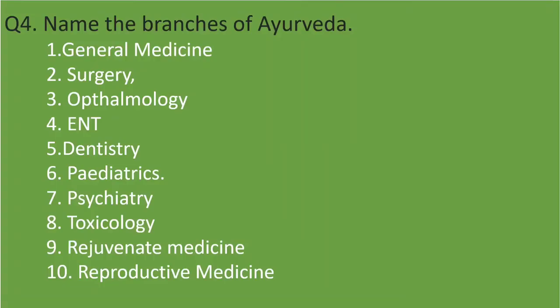Next question: name the branches of Ayurveda. First, general medicine; surgery; ophthalmology, related with eyes; ENT, related with ear, nose and throat; dentistry; paediatrics, related with children; psychiatry, dealing with mental disorders; toxicology, related with poison; rejuvenation medicine — how we can remain young; and reproductive medicine.